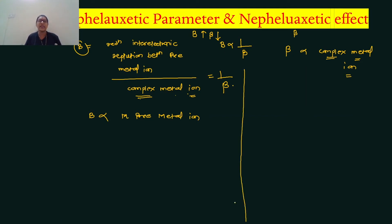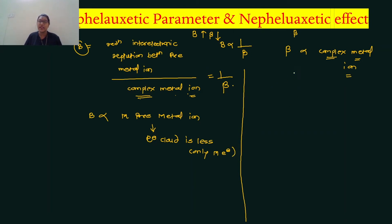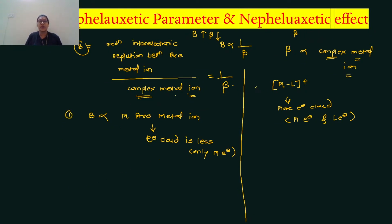Now we differentiate the nephelauxetic parameter and nephelauxetic effect. First point: in the free metal ion, the electron cloud is less, because here only the metal electrons are present. In the case of the nephelauxetic effect — the metal-ligand complex — there is more electron cloud, because both metal electrons and ligand electrons are present, giving more electron cloud.